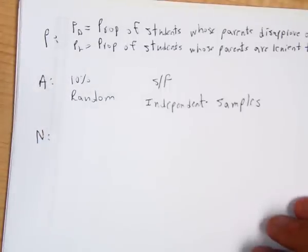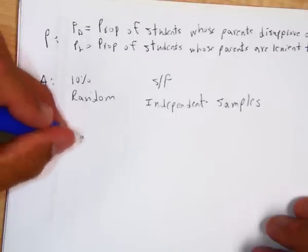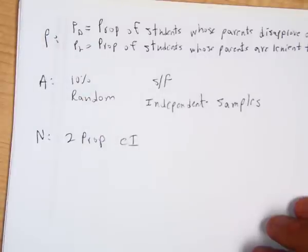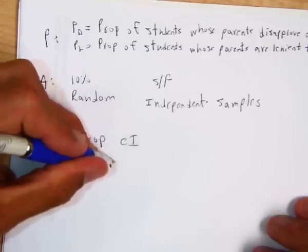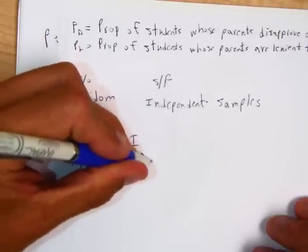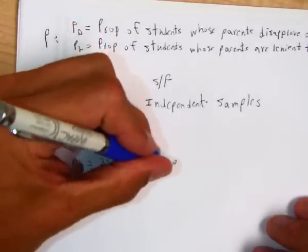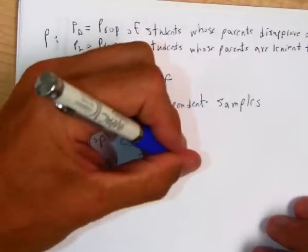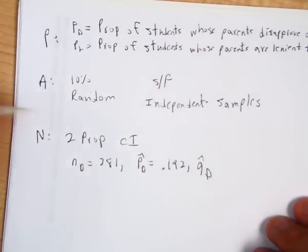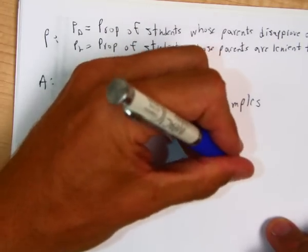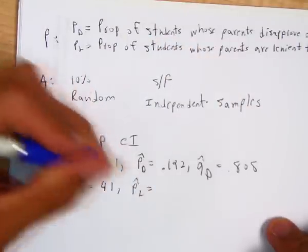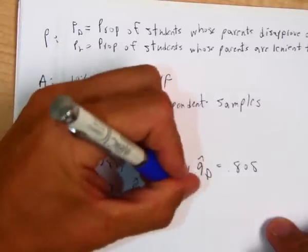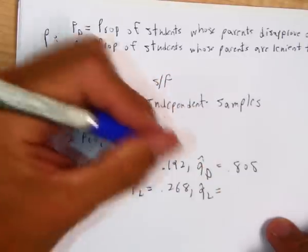So we've got to name everything. So what we have is we have a two proportion confidence interval. And again, we've got the same statistics. So N sub D is 281, P hat sub D is 54 over 281 or .192, and then Q hat sub D is going to be .808. And then N sub L is 41, P hat sub L is .268, and then Q hat sub L is .732.